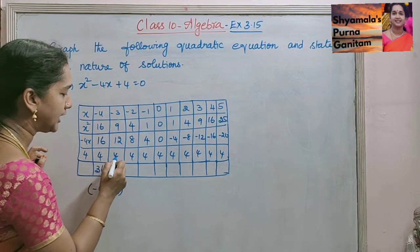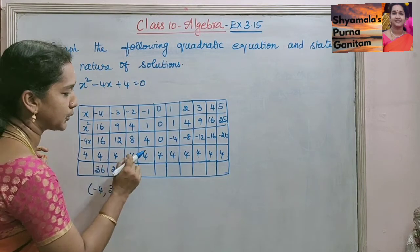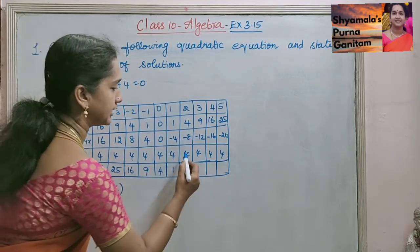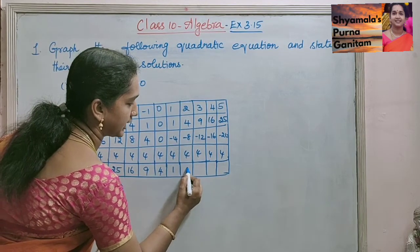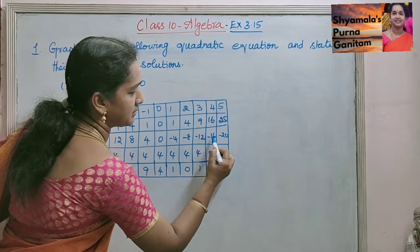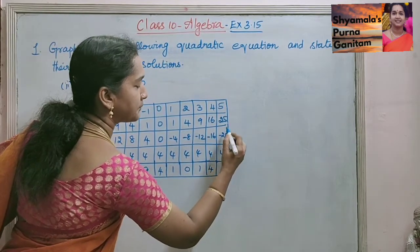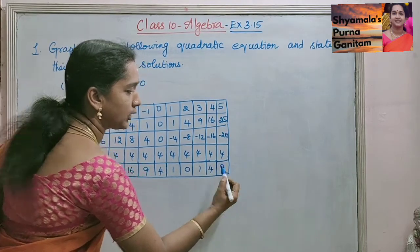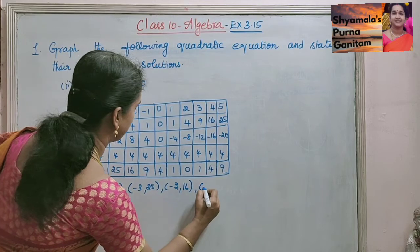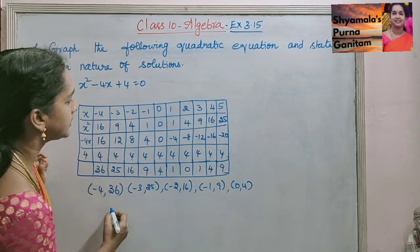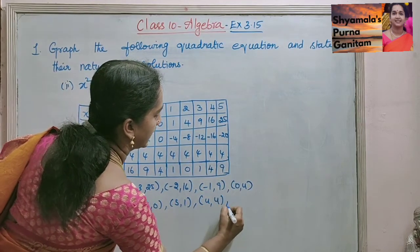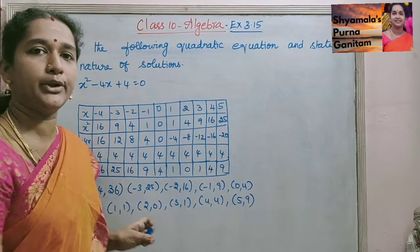Computing the remaining y values: for x equals minus 3, 9 plus 12 plus 4 gives 25. For x equals minus 2, 4 plus 8 plus 4 gives 16. For x equals minus 1, the plus 4 and minus 4 cancel, giving 1. For x equals 0, 4. For x equals 1, the minus 4 and plus 4 cancel, giving 1. For x equals 2, y is 0. For x equals 3, 9 plus 4 gives 13, then 1. For x equals 4, the minus 16 cancels, giving 4. For x equals 5, 25 minus 20 plus 4 gives 9. So the coordinate points are: (−3, 25), (−2, 16), (−1, 9), (0, 4), (1, 1), (2, 0), (3, 1), (4, 4), (5, 9).